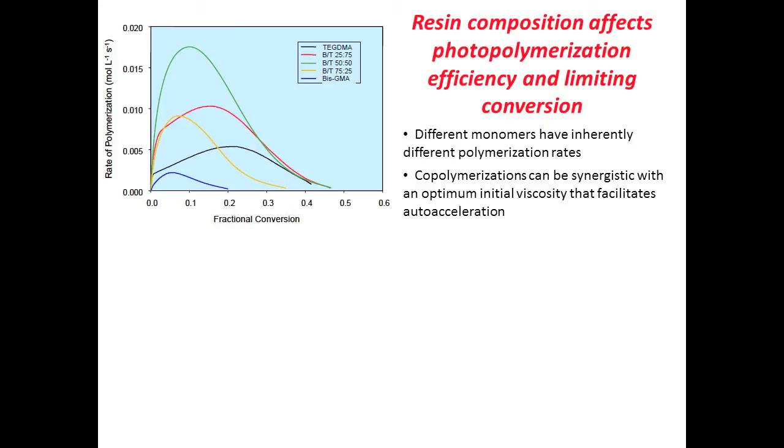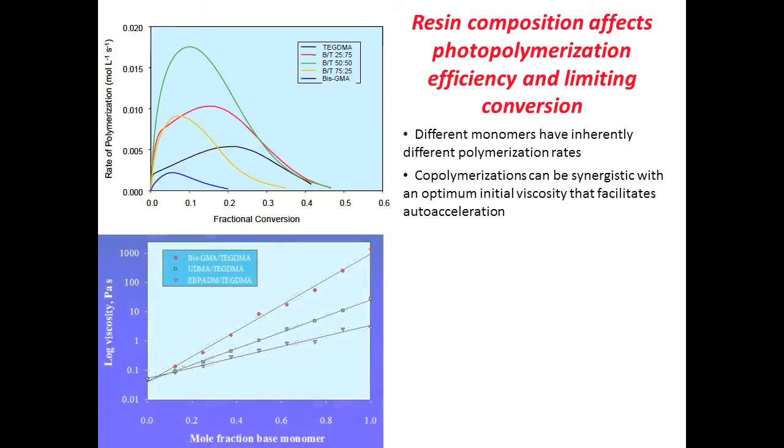When we mix those two monomers together in various proportions, you can see we get a synergistic effect in terms of the rate of polymerization that can be achieved quite dramatically, but also in the final conversion that can be achieved. So we can get higher degrees of conversion out of the co-monomer system compared to either of the individual monomers. Part of the reason for that is the viscosity effect, and here you see on a log scale the resin viscosity of a bis-GMA-TEGDMA series of resins.